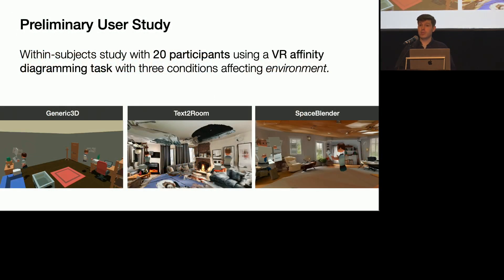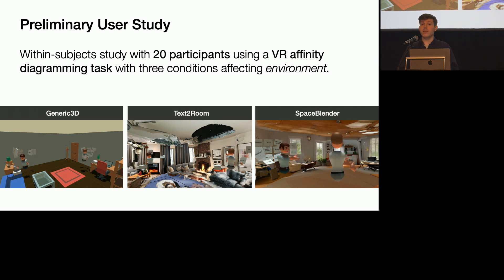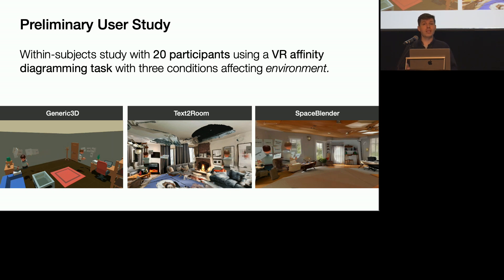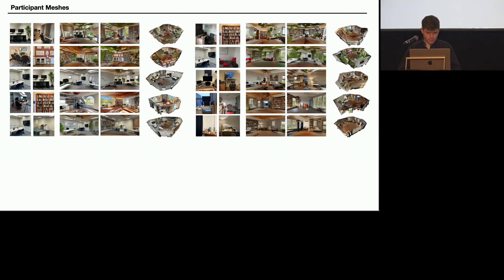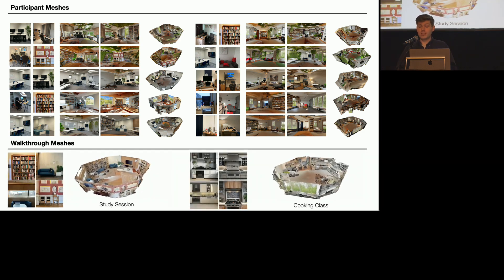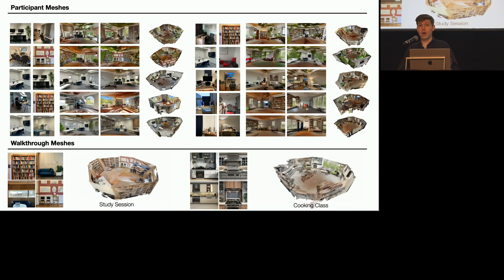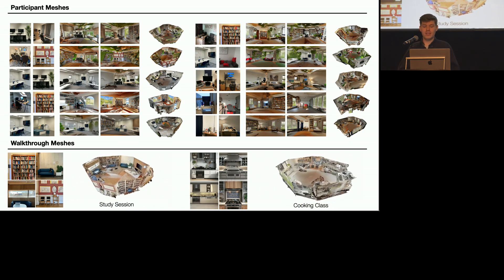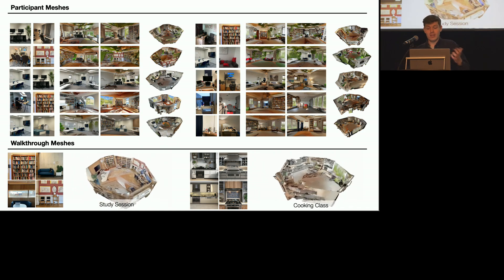We evaluated SpaceBlender in a preliminary within-subject study where 20 participants performed a VR-based affinity diagramming task in pairs. We compared three environments to assess their suitability for VR collaboration, including impact on user comfort, navigation, and behavior. Generic 3D used simple, low-poly spaces inspired by basic social VR platforms. TextureRoom was generated with unmodified source code. And for the SpaceBlender condition, we generated a unique environment for each pair of participants based on uploaded images they provided ahead of the study, so that each SpaceBlender environment incorporated parts of the real world familiar to a participant. After completing the task in all environments, participants were walked through two other environments showing different scenarios they might imagine for blended spaces, similar to Blendscape.